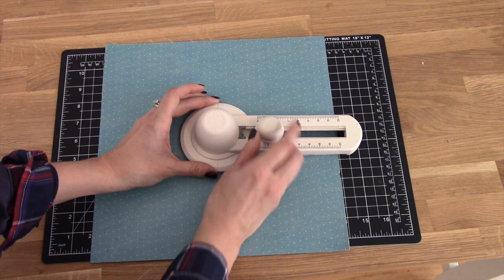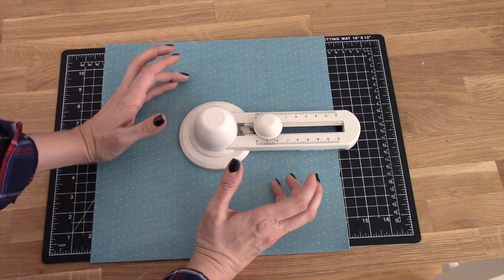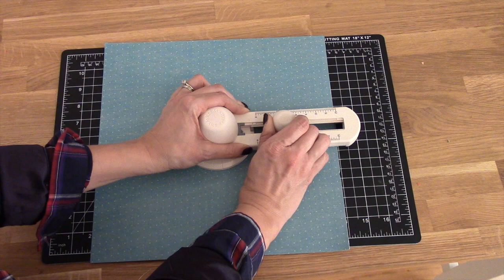So to cut a circle, all you do is center your cutter in the center of your paper. Then, depending on the size you want—let's just go with 7 inches—you're going to lift up on the handle here, move over to 7 inches, and then plop it down.